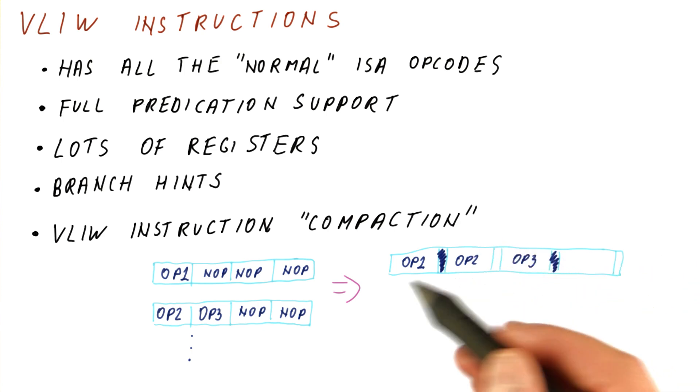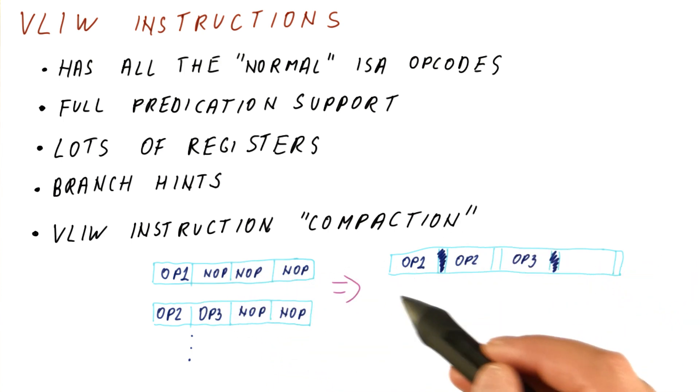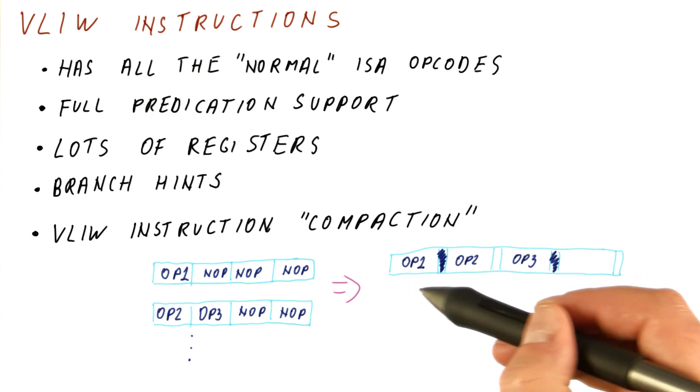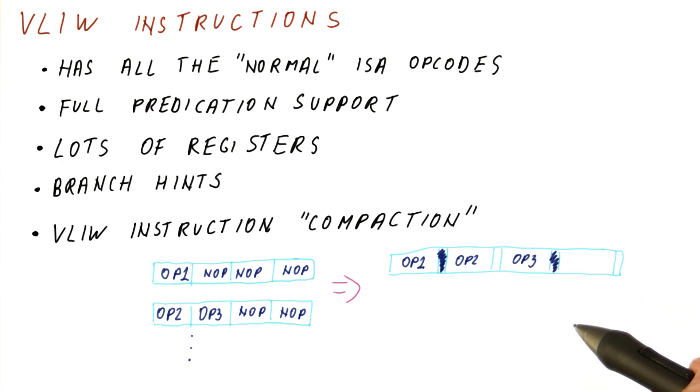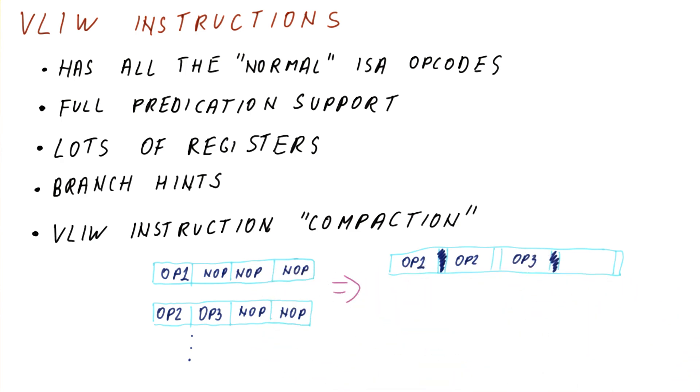So the idea is that instead of having a lot of NOPs in our instruction, now the processor fetches this instruction, checks for the stop bits, and in the first cycle does this, in the second cycle does up to the next stop, and so on. So this helps a lot in reducing the number of NOPs and thus the code bloat.